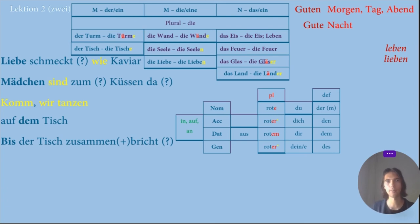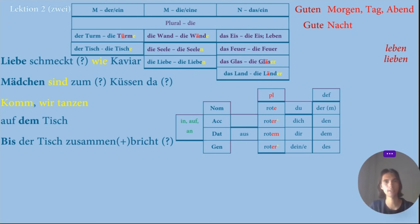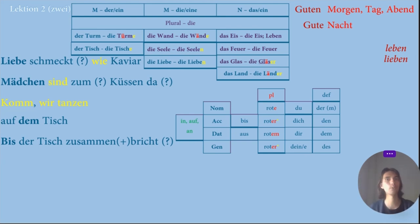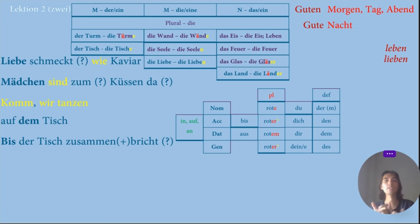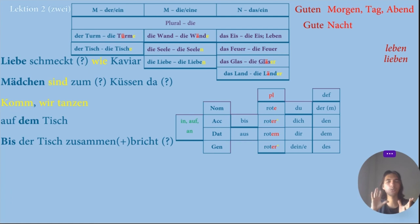The last line: 'Bis der Tisch zusammen bricht.' I analyzed the word Bis — another preposition, but Bis is used only in accusative. And Zusammenbricht — I understood something about German: long words are usually compound words consisting of two, three, or four parts. Zusammenbricht — the word 'collapsed' — so we have two words together. I found Zusammen means 'together,' but Bricht I didn't really understand, and it was quite difficult for me to find the logic.